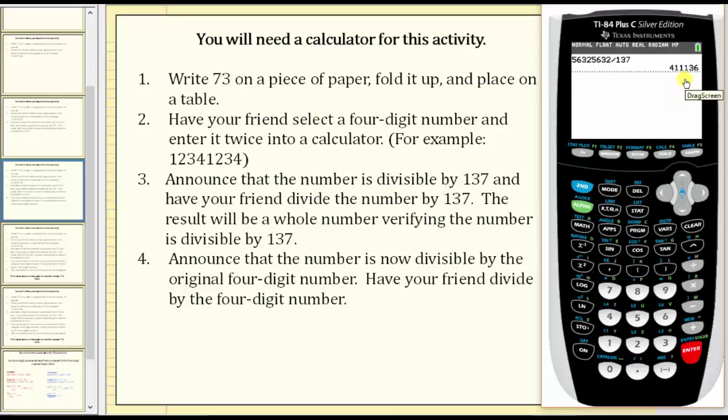Have your friend divide by the original four-digit number. So in my case, I will now divide by 5632, which was the original four-digit number.